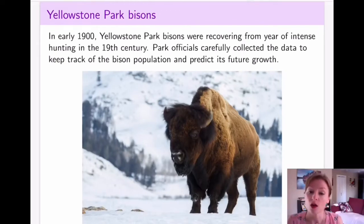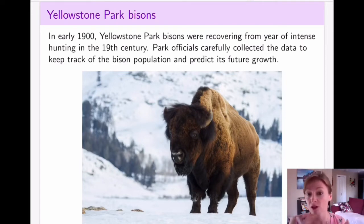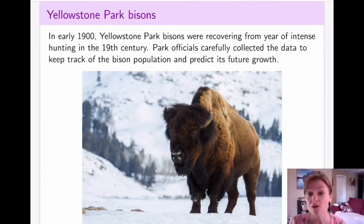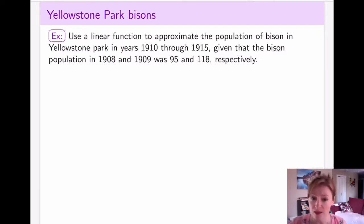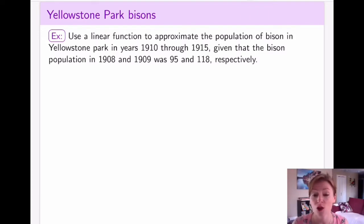Yellowstone Park is not only full of wolves and other animals but they also have a fairly large population of bisons, and because the park has been pretty well surveyed over the years we actually have very carefully collected data on the population of bisons dating back from the early 1900s. If you know the population in 1908 and 1909, can we use that information to predict the population in further later years? Because we have the data, we will be able to check how close our prediction is to the actual real thing.